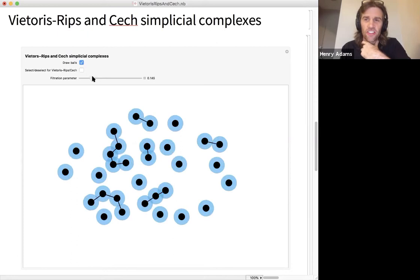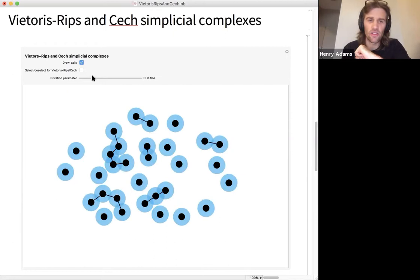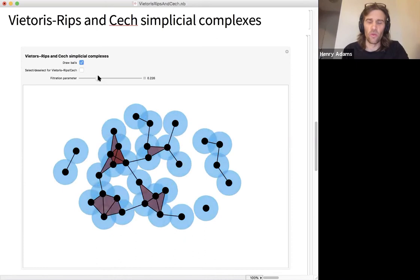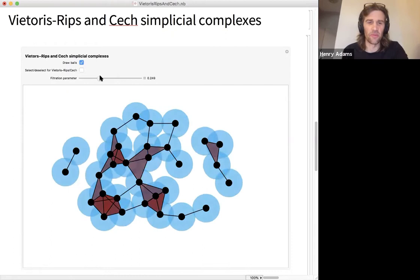Now, this is really a lot in line with single linkage clustering that we saw last time. Whenever two balls intersect, we say that the data points are close enough that we draw an edge between them. And in single linkage clustering, all you need to pay attention to is the edges to figure out who is in what cluster. But if you want things like one-dimensional homology as well, you'll also want to keep track of the triangles and the tetrahedra, et cetera, that appear.